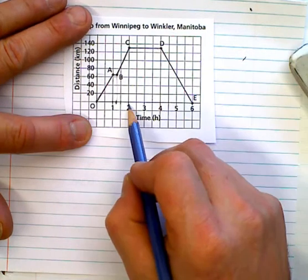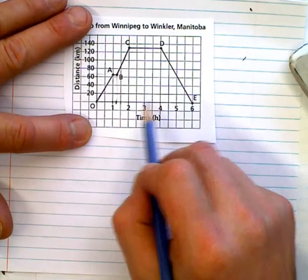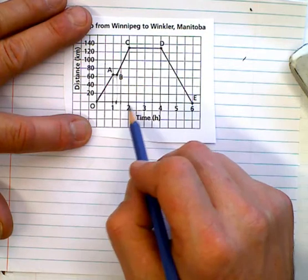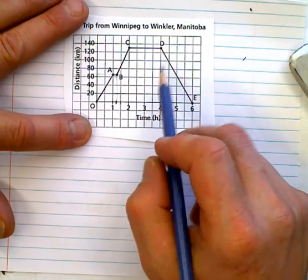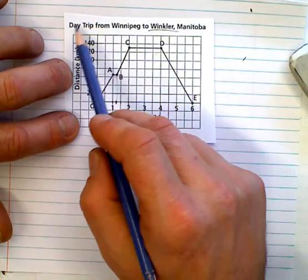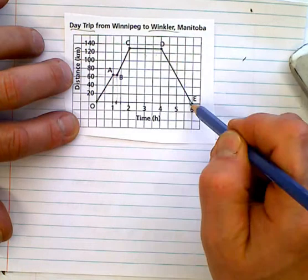They stopped after two hours. For how long? They stopped for two hours. So, they drove for two hours. Stopped for two hours. That's probably when they got to Winkler. They stayed at Winkler for two hours because it was a day trip. And then they decided to go, boom, straight home.